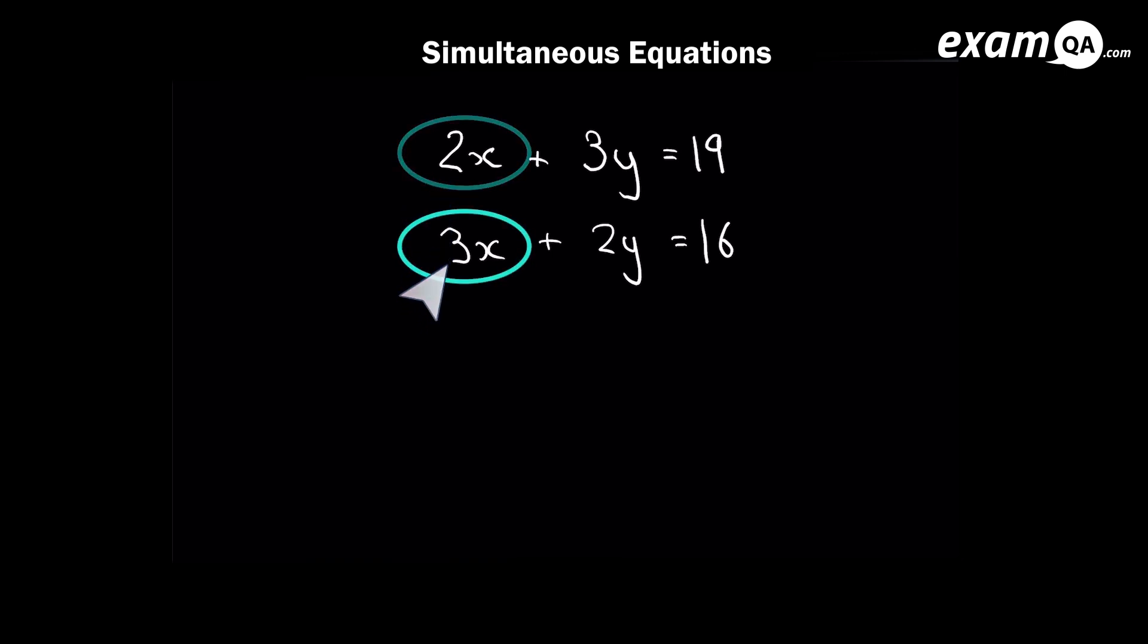And on the bottom one, we've got 3x. And you've probably already guessed it. You could times the top one by 3 and the bottom one by 2 and they'll both become 6x. So let's go ahead and do that.